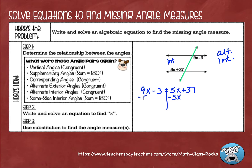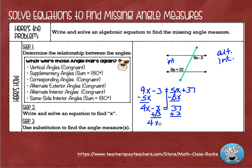That's going to leave me with 4x minus 3 on the left side and 37 on the right side. Then I'm going to solve my two-stepper — I'm going to add 3 on each side and that's going to leave me with 4x equals 40.